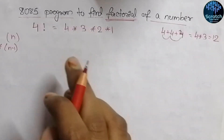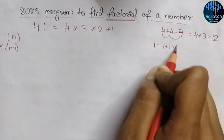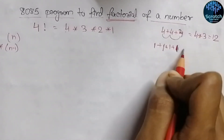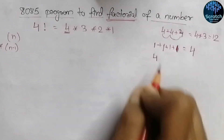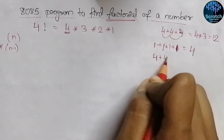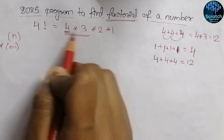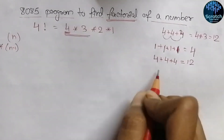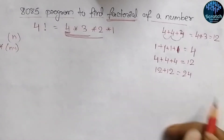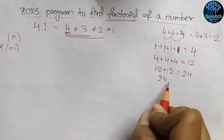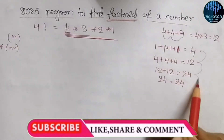First, we will add one four times to get the value four. Then we will add four with itself three times, giving us twelve, which is four into three. Next, twelve will be added twice to itself giving twenty-four. Then twenty-four will be added to itself once, and we get twenty-four as the final result.